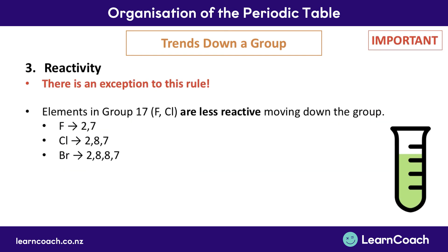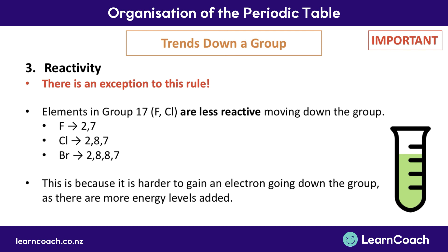As with all rules there is an exception to this reactivity trend: elements in group 17 are less reactive as you move down the group. The reason is that it becomes harder to gain an electron as you move down group 17, because there are more energy levels or shells of electrons. Moving from fluorine to chlorine, a whole additional shell of 8 electrons is gained, and the same happens from chlorine to bromine. This means it's harder for an electron to join the valence shell, as the distance from the positive nucleus is getting larger.